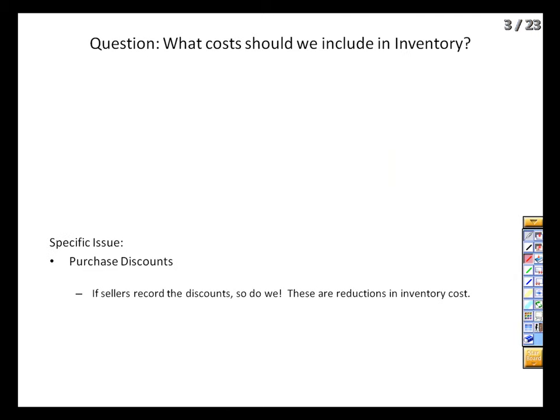So we know which items are ours and which aren't. The next question is what value we should put on them. Everything needs to be expressed in terms of U.S. dollars, so simply knowing if an item is ours isn't enough. The general rule is: all costs required to get the inventory ready for sale. These are costs that are going to be capitalized and deferred until we make the sale.